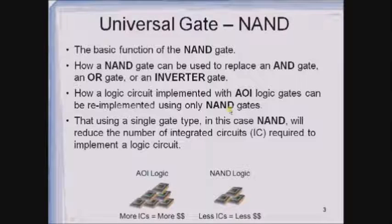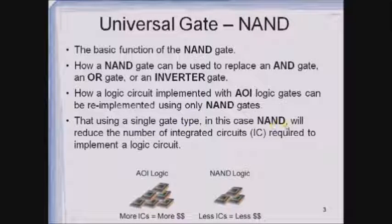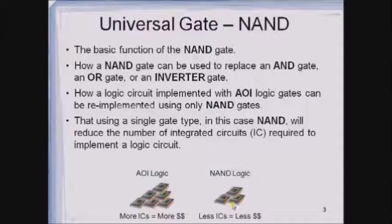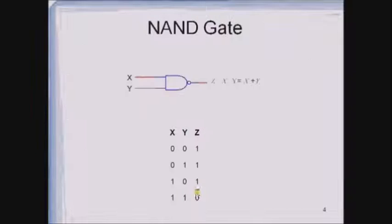If you have a boolean expression, we are going to implement it with the help of AND, OR, and inverter, but now we are going to implement the same boolean expression only with the help of NAND gates. Using a single gate type — in this case NAND — will reduce the number of ICs required to implement a logic circuit. If you use AOI logic, it requires more ICs, which increases the cost of the circuit. With NAND logic, fewer ICs are required, therefore the cost of the circuit gets reduced.